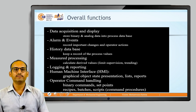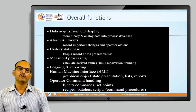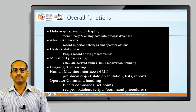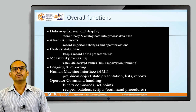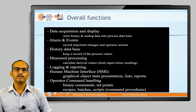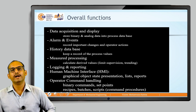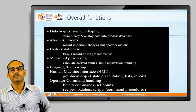The third function is the history database. All different events that happened in the past are recorded as a history database, keeping a record of all process values. Logging and reporting is also a key function — whatever data is collected can be logged and reported to higher authorities. All logs are available, so you can review what was happening one or two days back.